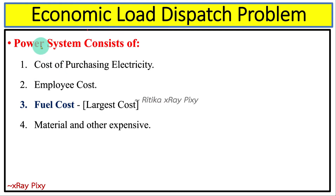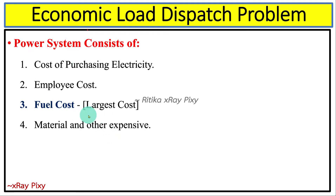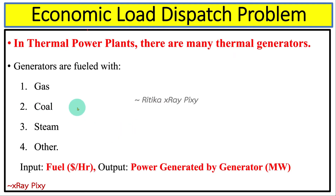The power system has certain cost requirements including cost of purchasing electricity, employee cost, fuel cost, material cost, and other expenses. Among all of these, the largest cost is fuel cost. In thermal power plants, generators are fueled with gas, coal, steam, and other fuels.